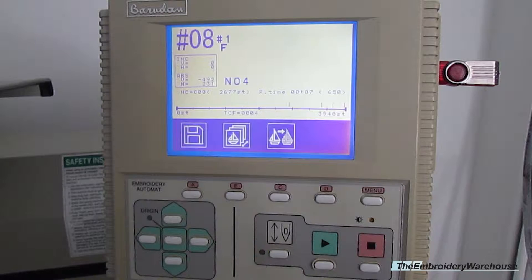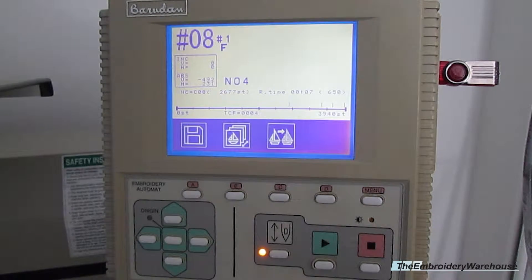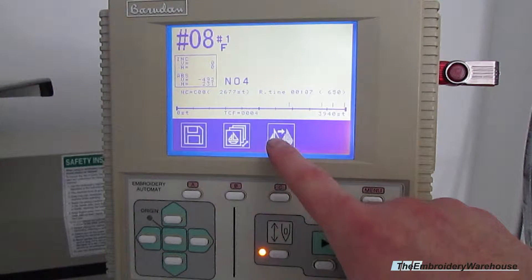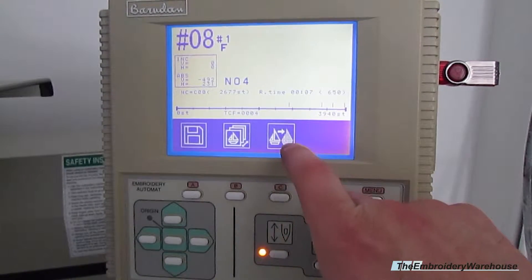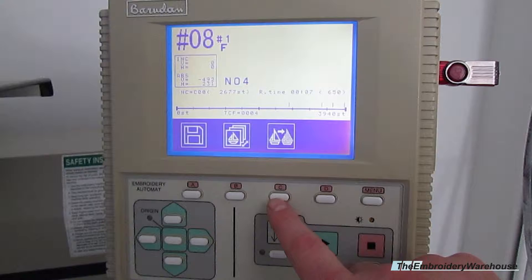To select the needles or the colors that we want to run in the order that we need to, go ahead and select the button with the boat and the arrow to the right to the next boat, and that will be letter C.